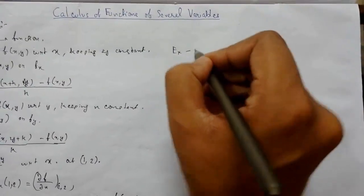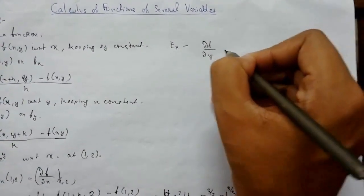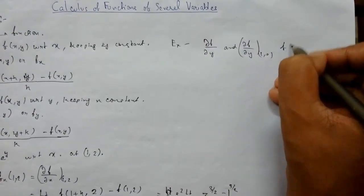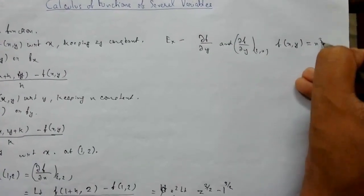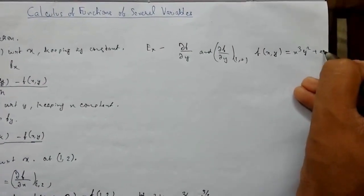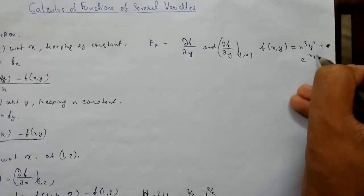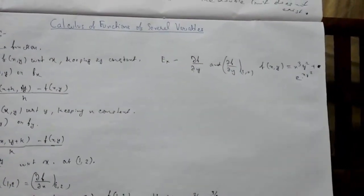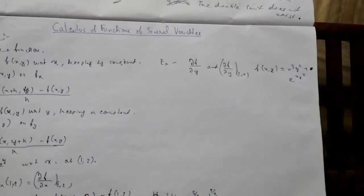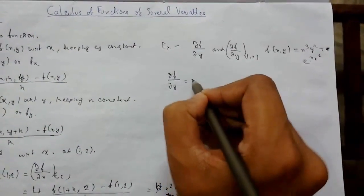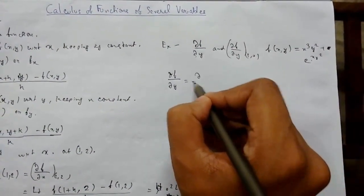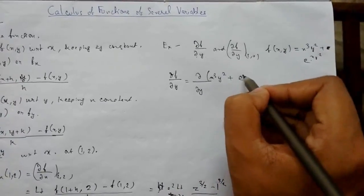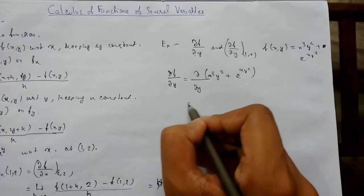Now let's see another example. We need to find ∂f/∂y at (1, 0) for the function f(x, y) = x³y² + e · e^(xy²). Here we need to find the partial derivative with respect to y, so we compute ∂/∂y of [x³y² + e^(xy²)].